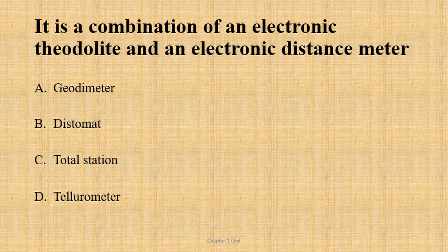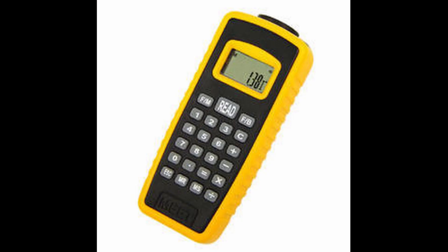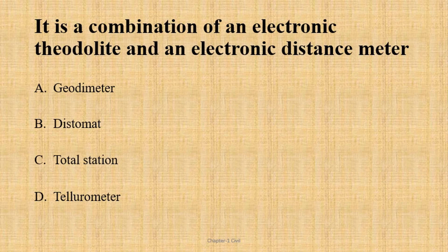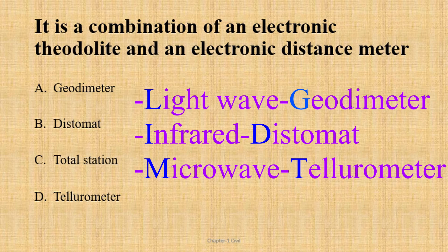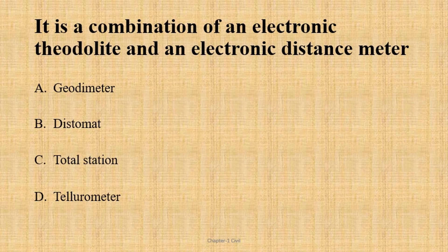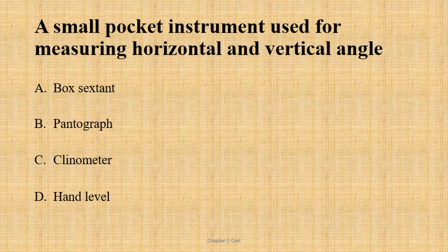The total station is the combination of electronic theodolite and electronic distance meter (EDM). The EDM is called a geodometer, distormator, tellurometer, and uses radio waves and infrared light waves. The total station is the correct answer.